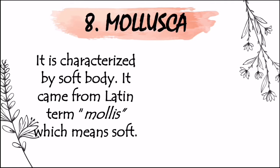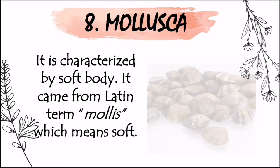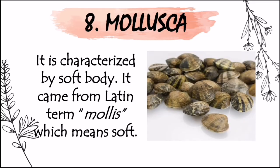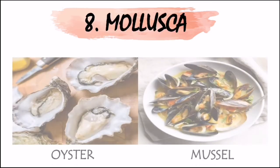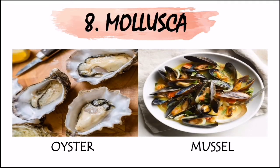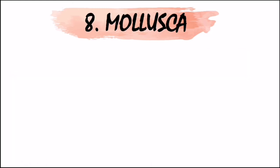Moving on, we have the eighth phylum, which is Mollusca, characterized by a soft body. It came from the Latin term mollus, which means soft. These are soft-bodied organisms. Examples include clam, oyster, and mussels. They are unsegmented animals. The exoskeleton of snails and clams is made up of calcium carbonate. Some mollusks, like the squid and octopus, are not covered with an exoskeleton; however, their bodies are also muscular.